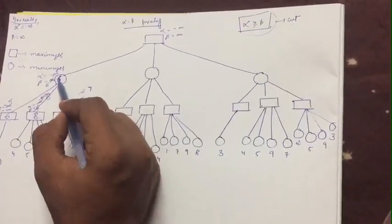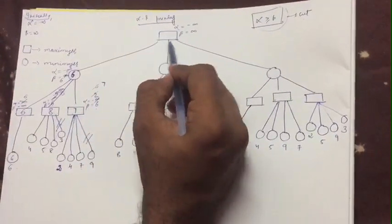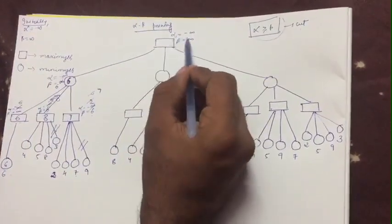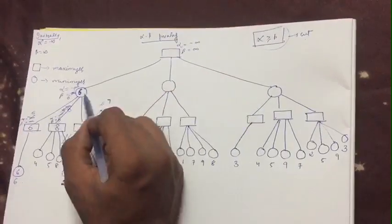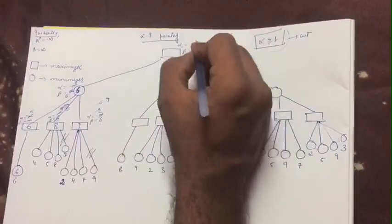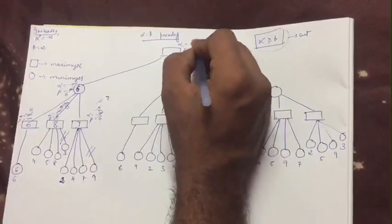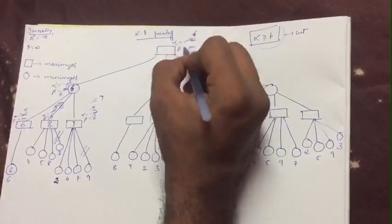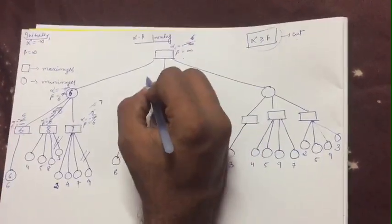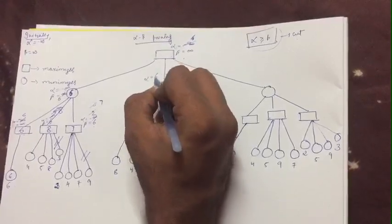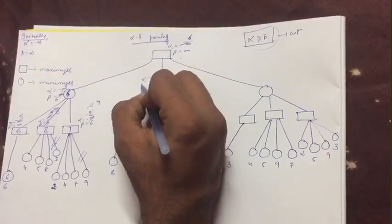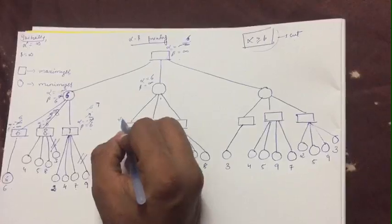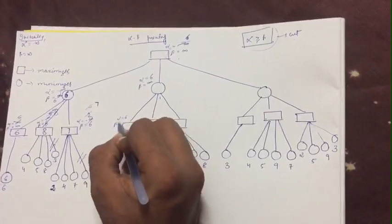We traverse value 6 up to a maximizer node, so we update alpha. Is minus infinity greater or 6? Obviously 6, so cut minus infinity and write alpha as 6. We continue down this subtree with alpha equals 6 and beta equals infinity.